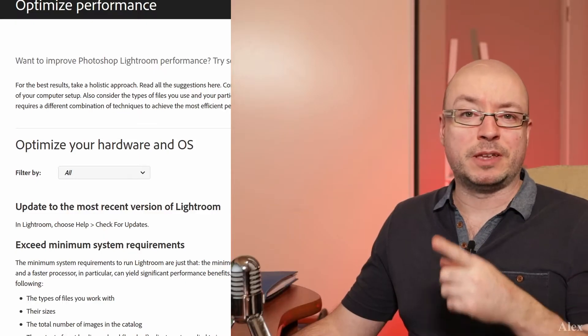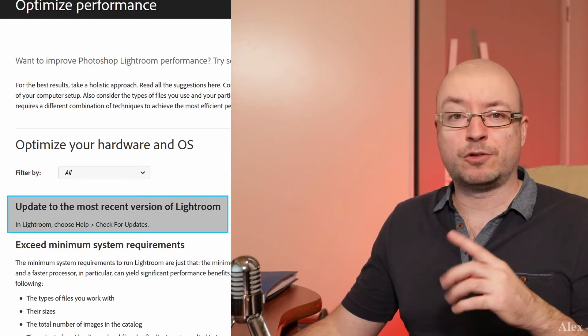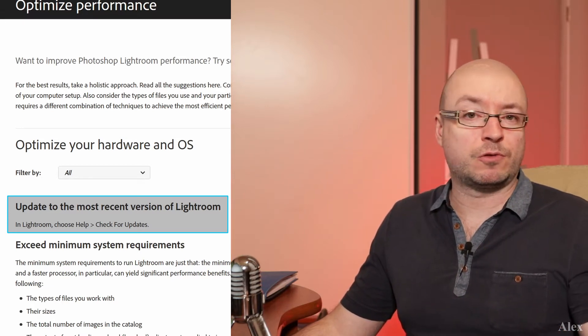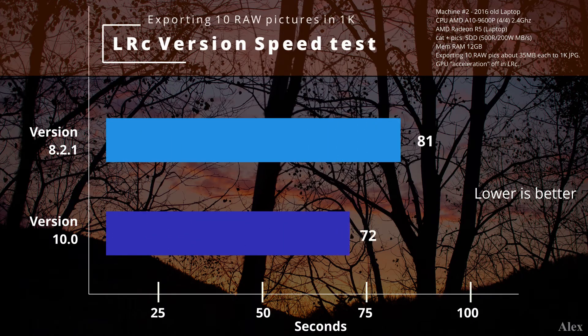I'm kidding, there's more than that, but upgrading the CPU is going to make the biggest impact. One of the things in the official 'optimize your Lightroom' page says you should update your version of Lightroom to get better performance. Let's test this. Exporting 10 raw pictures in version 8.2 took 81 seconds, and after upgrading to version 10 it's 72 seconds — about 10% faster.